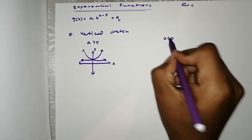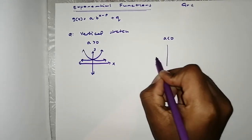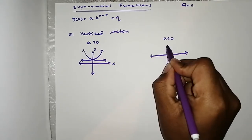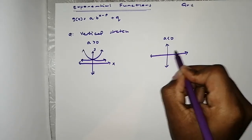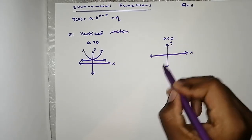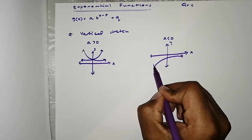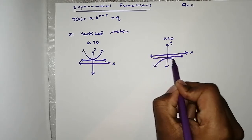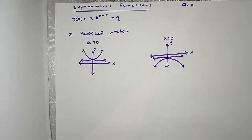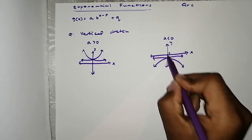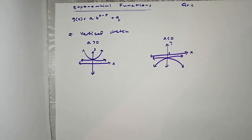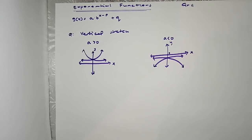When A is less than 0, what do you think the shape would be like? When A is less than 0, this is X, this is Y — our graph will be something like this. Here we are considering the basic cases where the graph has not shifted, either vertically or horizontally. So these are the basic cases.